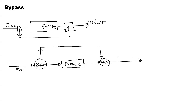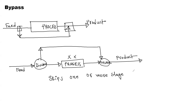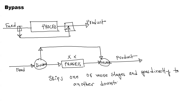This is the product. Bypass is the task. If we skip the actor, we can do mixed streaming. Bypass skips one or more stages and goes directly to another stage downstream, or each stage.